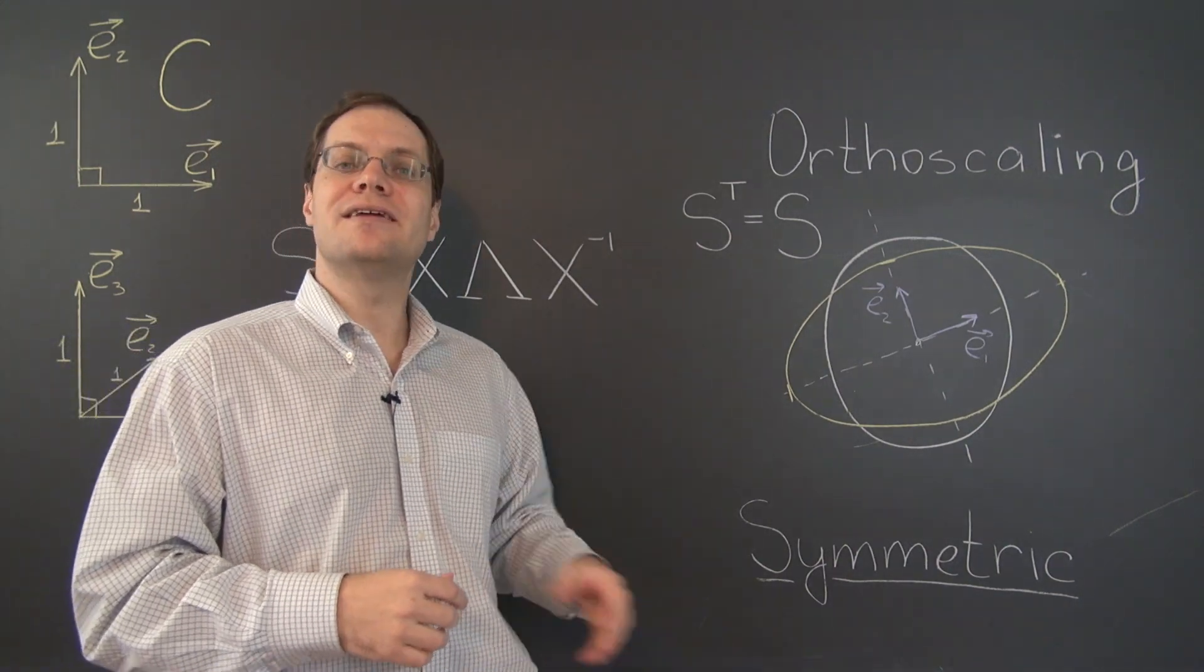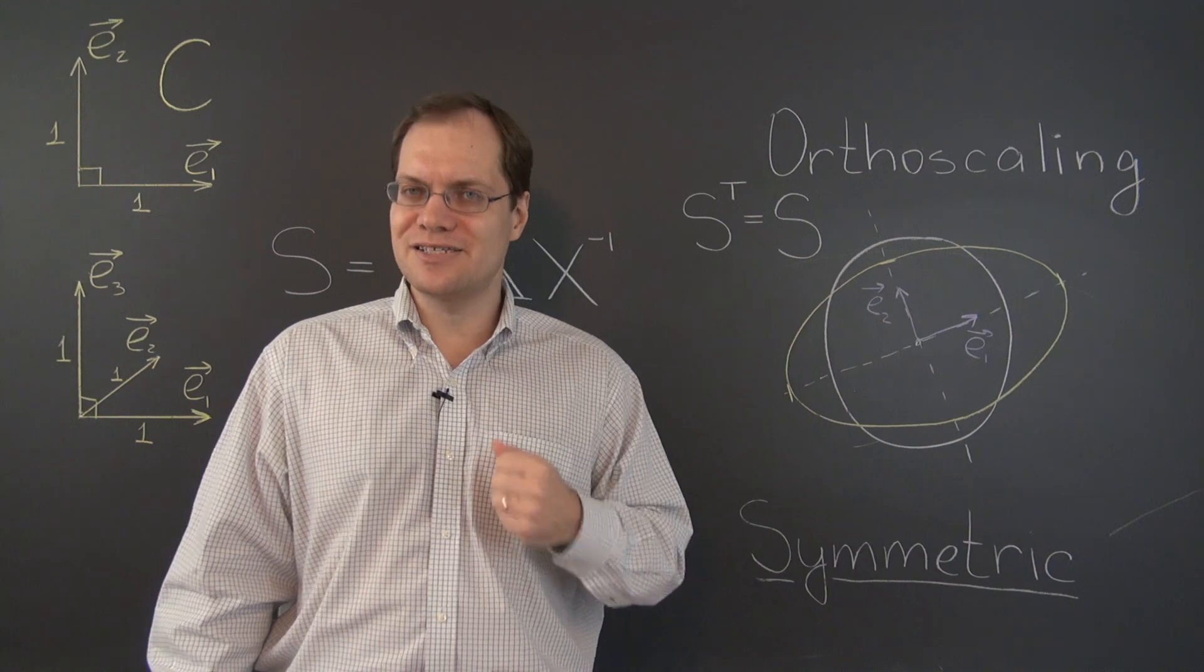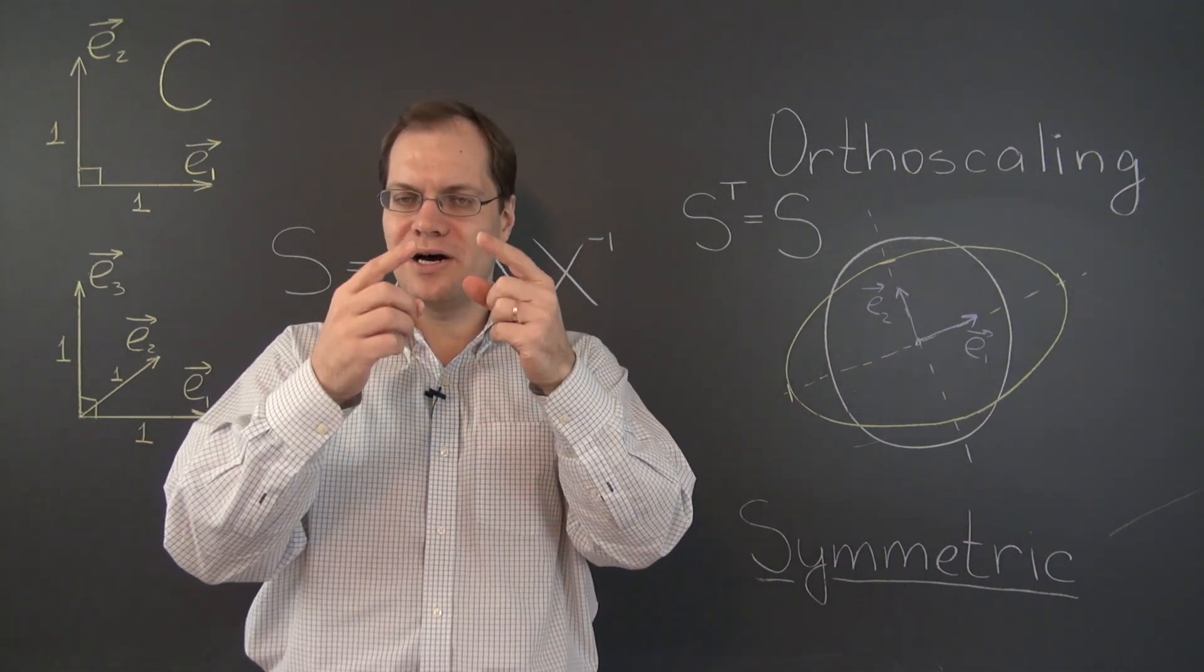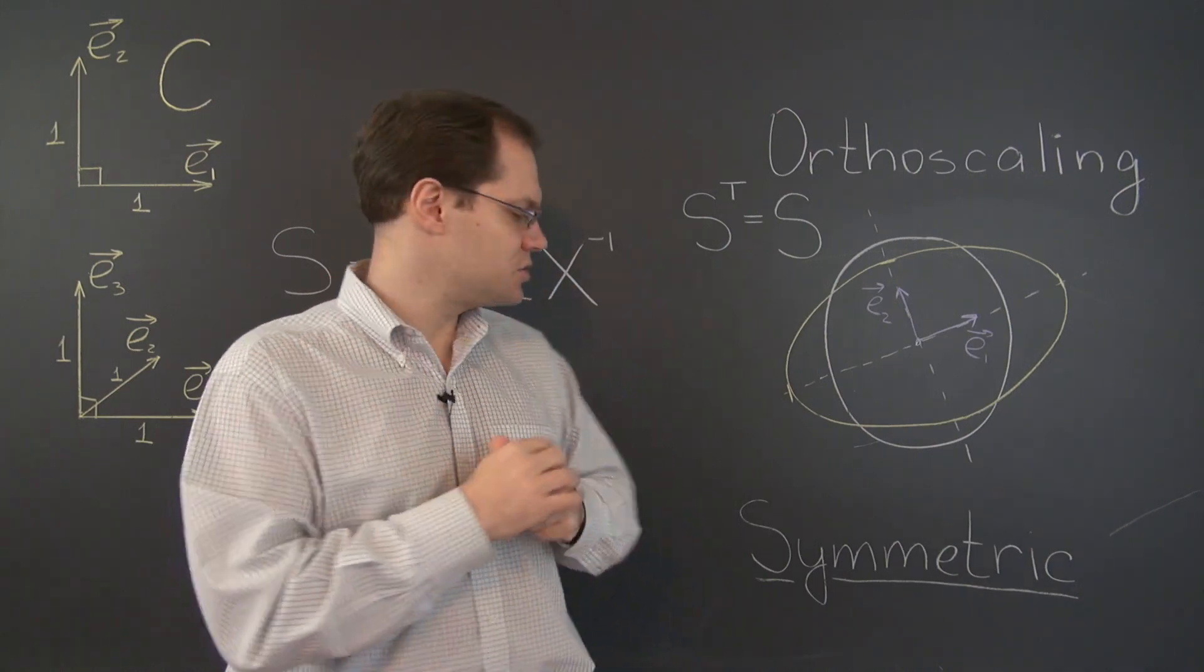And that means that their components are orthogonal, sets of components are orthogonal in the sense of the algebraic dot product, alpha 1, beta 1 plus alpha 2, beta 2 plus alpha 3, beta 3 and so forth.